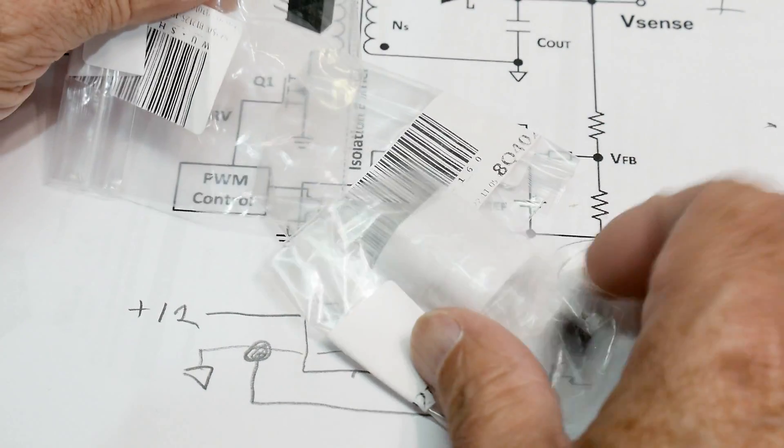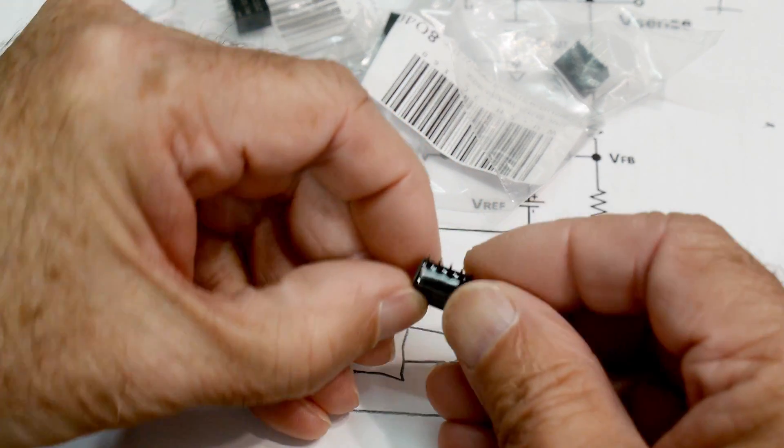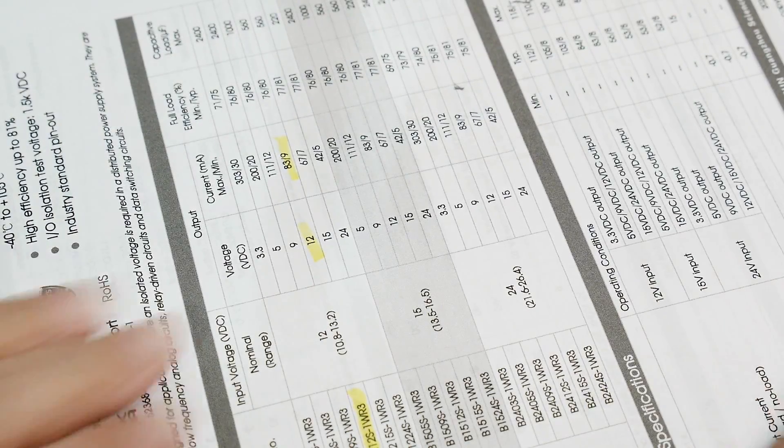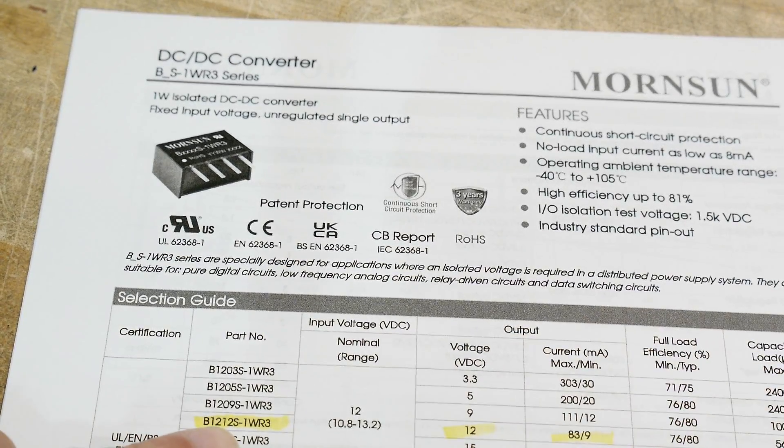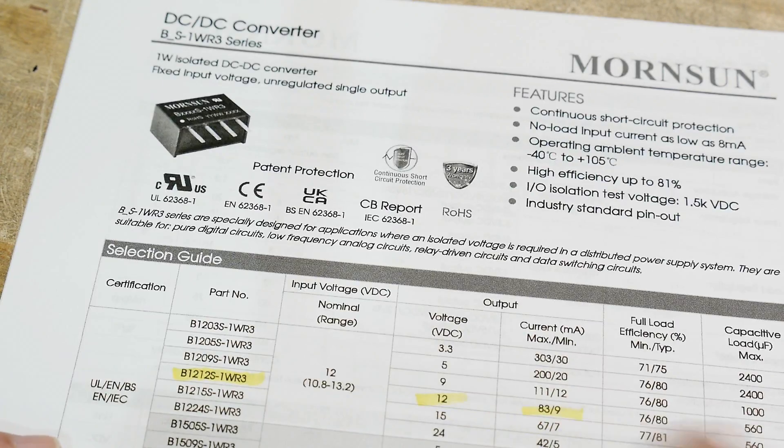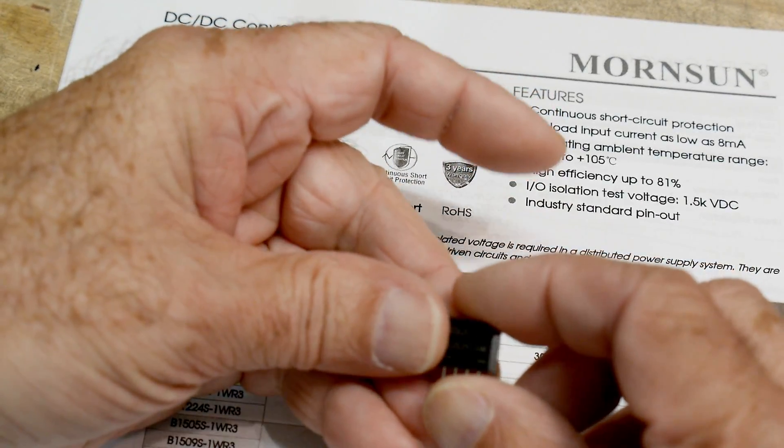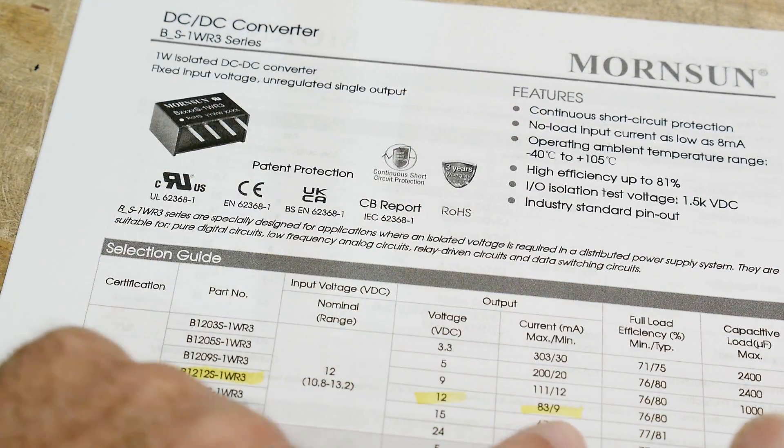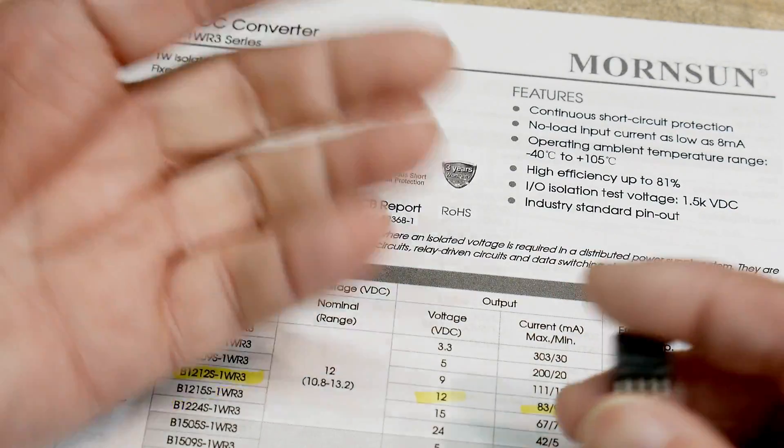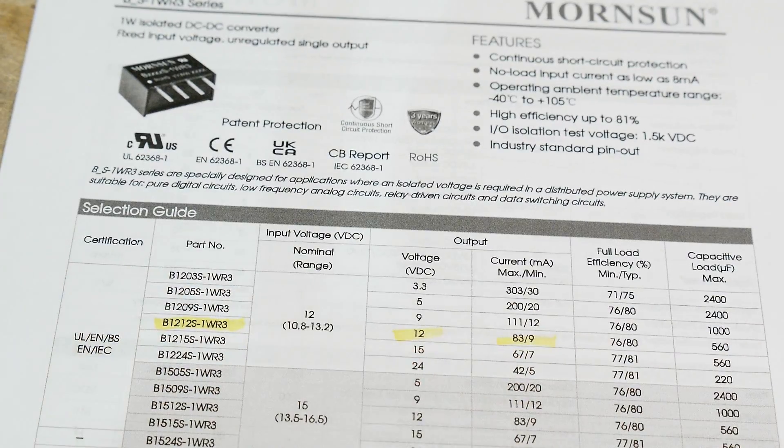So I bought some isolated DC to DC converters and they were super cheap. So this little guy here is the DC to DC converter. It's not very big. It's a 12 volt version. So let's look at the data sheet of this thing. This one happens to be a B1212S-1W, one watt. So it's a one watt DC to DC converter. 12 volts in, 12 volts out. And the maximum current output is 83 milliamps. And there's a minimum. So a lot of DC to DC converters don't work unloaded. You have to have at least some load on them. And this one requires at least nine milliamps of load in order to work correctly.